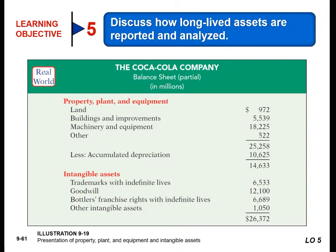Last but not least, we're going to talk about how long-lived assets are reported and analyzed. Plant assets are shown in the financial statements under property, plants, and equipment, and intangible assets are shown separately under intangible assets. Intangibles do not usually have a contra asset account like accumulated depreciation. The amortization of these accounts is recorded as a direct decrease, or a credit, to the asset accounts.